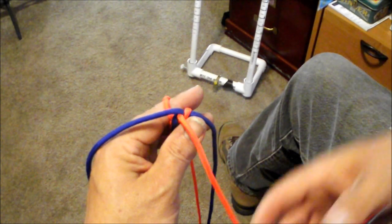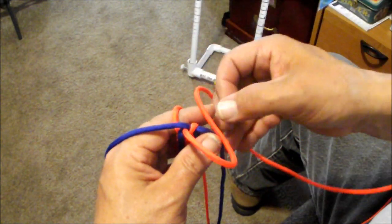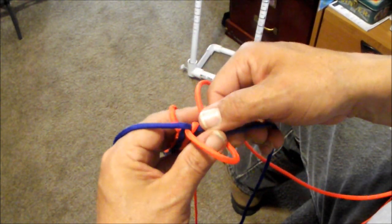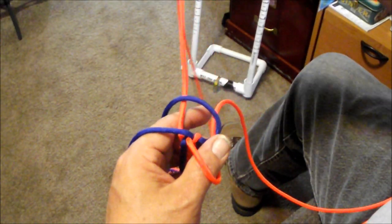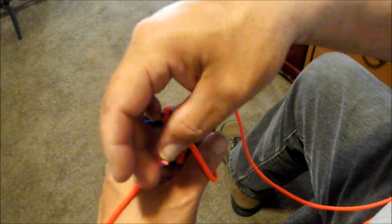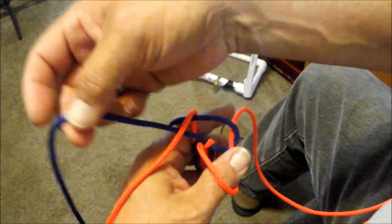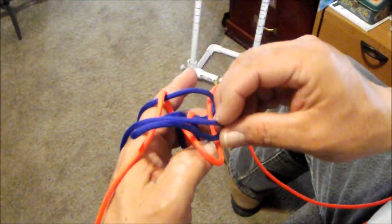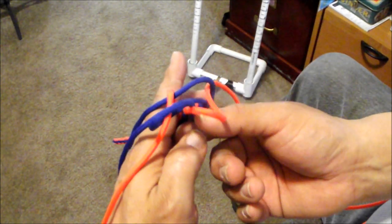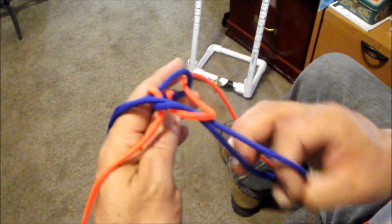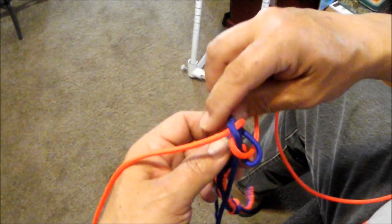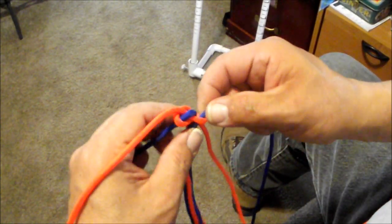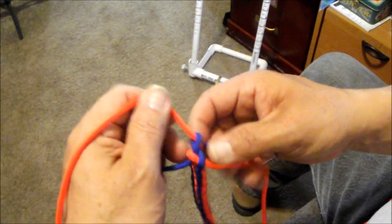So it goes over to the right and over to the east. East comes up and over both, goes over the north. North goes over both. West comes down and through the loop you made. And it goes over both.